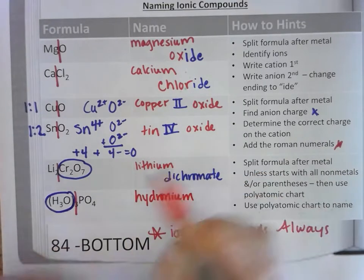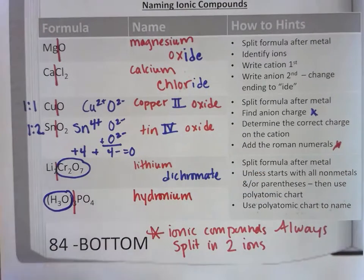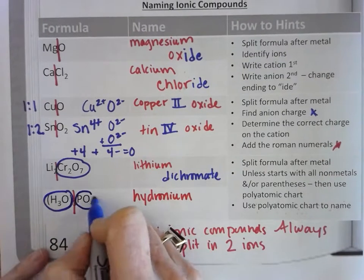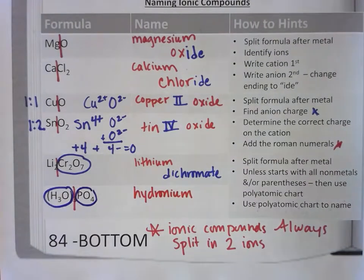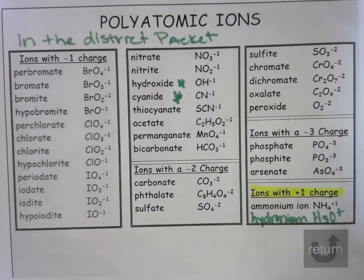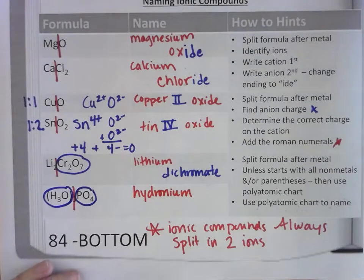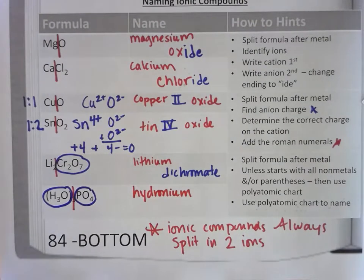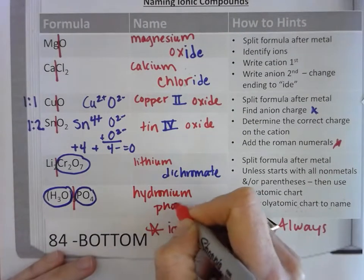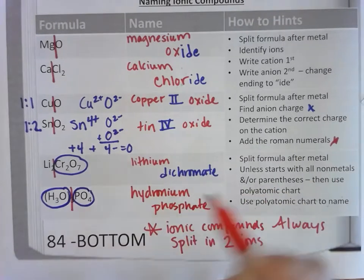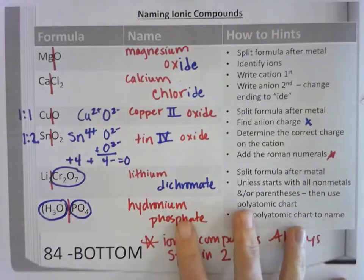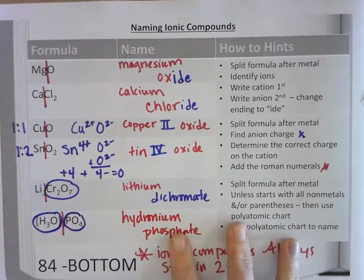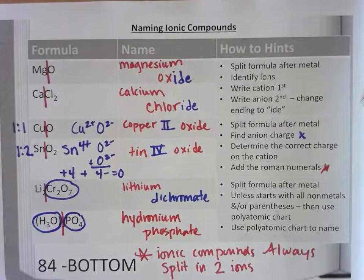And yes, there's more than one thing on this side, but it's just all one thing. So PO4. Those are the three different examples or types of ions that you're going to have to name.